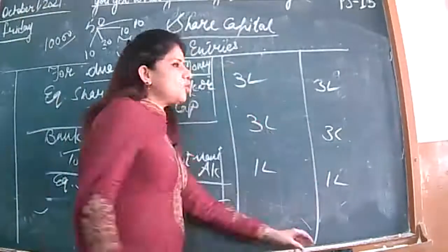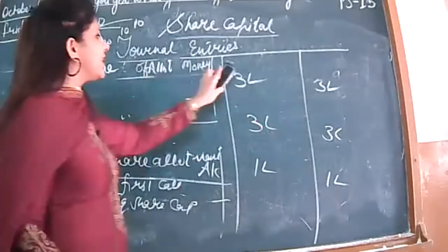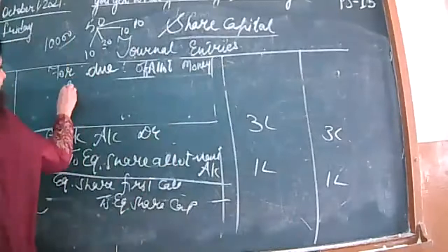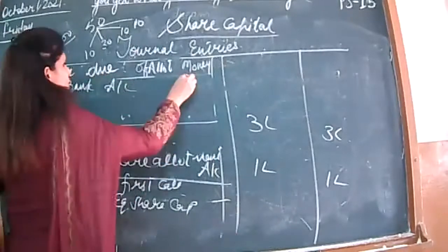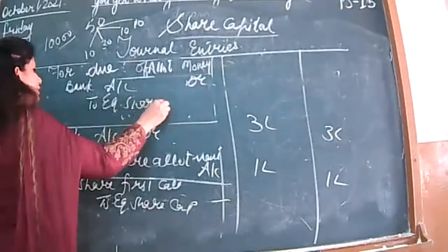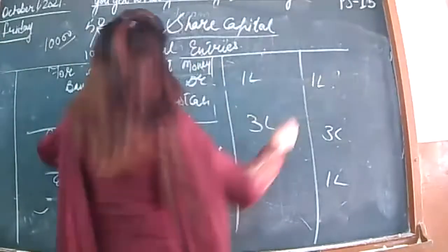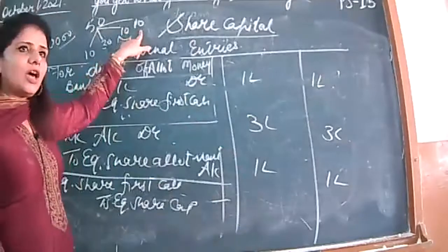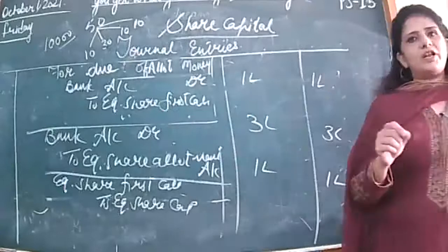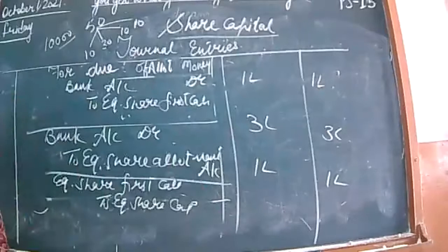Again, assuming all shareholders have paid — 1 lakh earned from them, they have paid 1 lakh. Then bank account debited to equity share first call — 1 lakh. Now we will inform them to pay the second call. The entry will be: share second and final call debited to equity share capital, and then bank account debited to equity share second and final call.